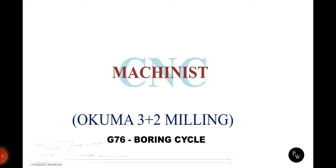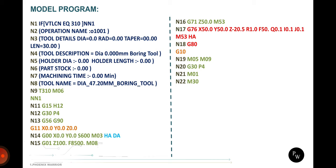Today we are going to see about the boring cycle in the Okuma machine — it uses the code G76. I will explain that in a very clear way. This is a model program for the boring cycle generated by NX 12 software. It has details from block N1 to N8.